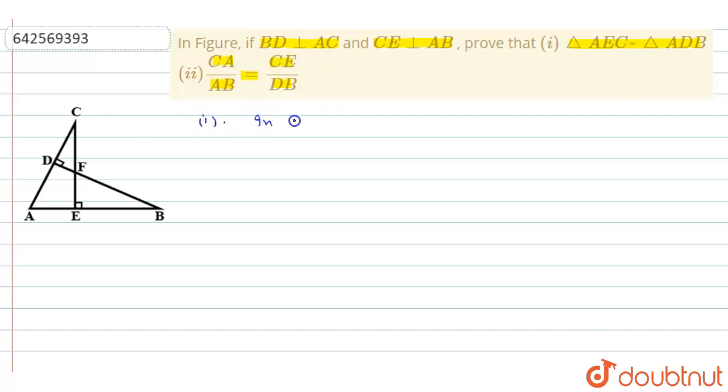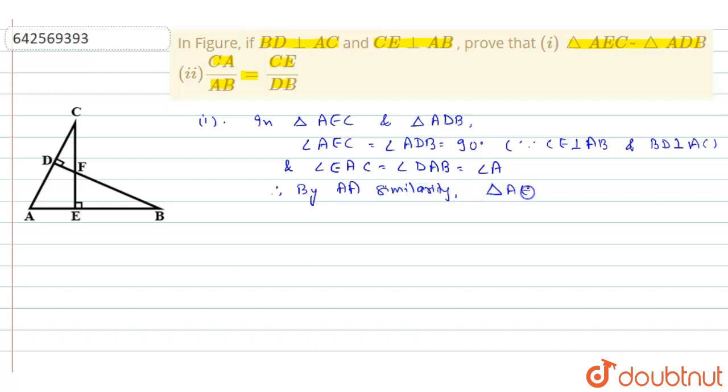For the first part, in triangle AEC and triangle ADB, angle AEC is equal to angle ADB is equal to 90 degrees, since CE is perpendicular to AB and BD is perpendicular to AC. And angle EAC is equal to angle DAB is equal to angle A. Therefore by AA similarity, we can write triangle AEC is similar to triangle ADB.